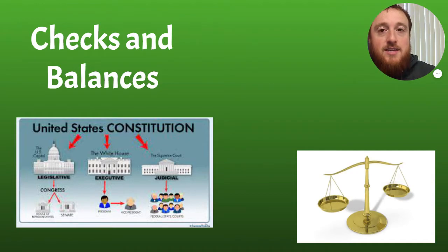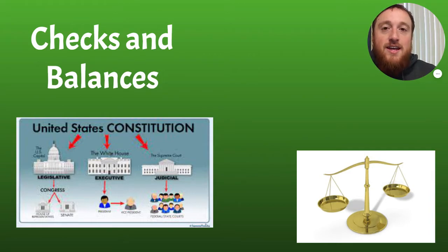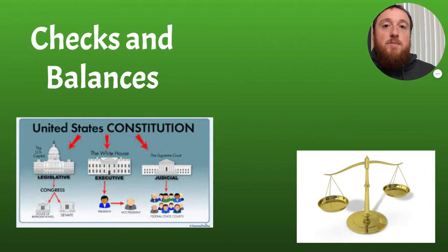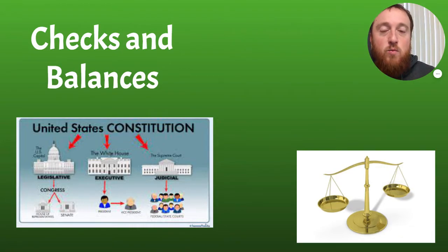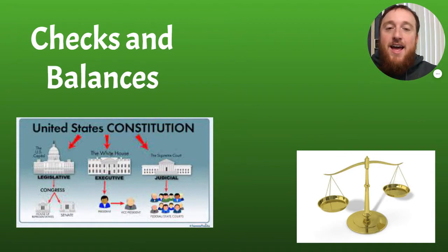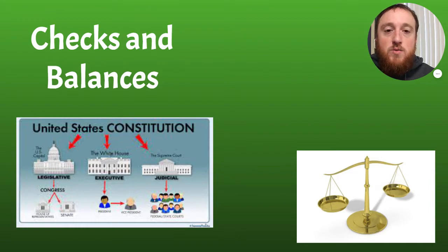What we're going to learn about today is how those branches of government check one another to make sure they do not get too powerful. When we talk about the seven principles of the Constitution, separation of powers and checks and balances are pretty essential to make sure that the federal government stays structured with three branches, not just one. We're going to talk about each of those branches.